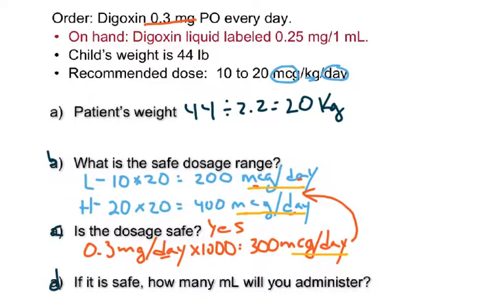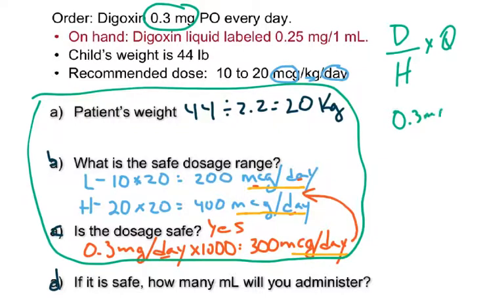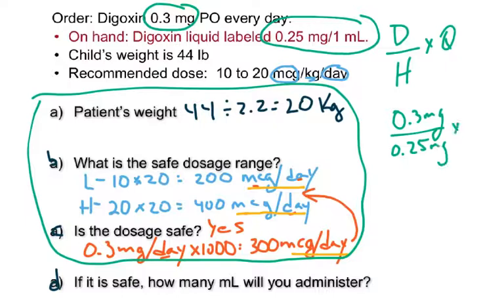Since it's safe, do step D: determine how many milliliters to give. Go back to the original dosage problem. He is ordered 0.3 milligrams. Using D over H times Q: desired is 0.3 milligrams, on hand is 0.25 milligrams per one milliliter. So 0.3 divided by 0.25 times 1 gives 1.2 milliliters. That's the final answer.